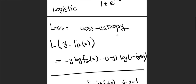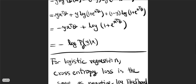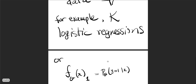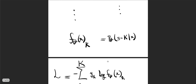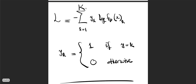This is the cross-entropy for a K-class classification problem. You can verify that when K equals 2, this formula reduces to the binary cross-entropy formula shown earlier.